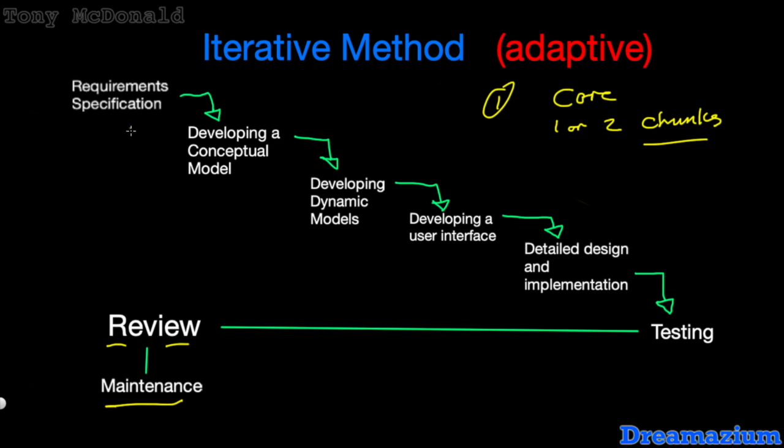We still need to know what needs to be in there. We've developed some conceptual models, some dynamic models. There might be a user interface, how we're going to interact with this particular part of the program that we're developing. Then design and implementation, testing, and then we get to go over to review. At this point we review and see if anything needs to change. Is there anything wrong with any of these stages? Then we can go back to the beginning.